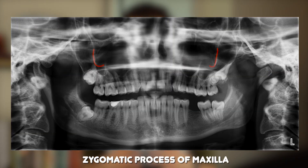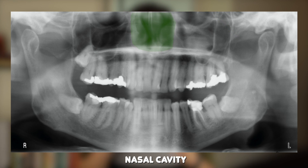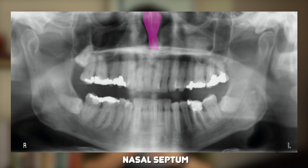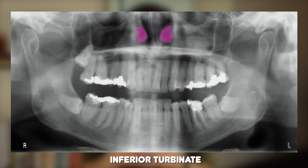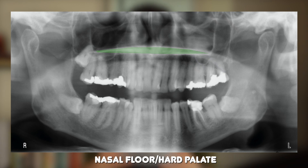We can also see the zygomatic process of the maxilla, or the malar buttress, which usually appears as a U, V or J shaped radio-opaque area around the first or second maxillary molars — this is why these teeth can be difficult to extract, as the bone is quite dense in this region. The borders of the nasal cavity can be seen as radio-opaque lines medial to the maxillary sinus. Within the nasal cavity we can also see the nasal septum as a radio-opaque area at the centre of the panoramic film, and potentially the inferior nasal turbinate as a round or curved radio-opaque mass. The floor of the nasal cavity, or the hard palate, is present as a thin radio-opaque line, which may be superimposed over the maxillary sinus or maxillary teeth.